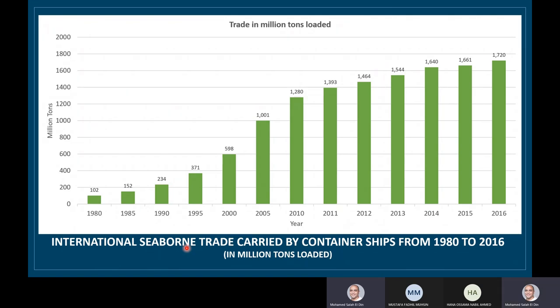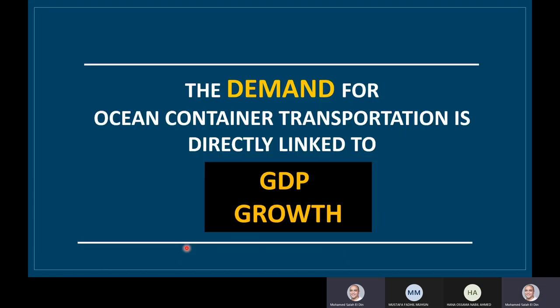Looking at trade data in millions of tons, international seaborne trade has been increasing significantly since the 1980s through to today. The demand for ocean container transportation is directly linked to GDP growth — the more production, the more need for containers, because the more need for raw materials and imports and exports.